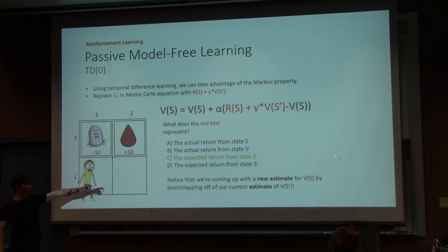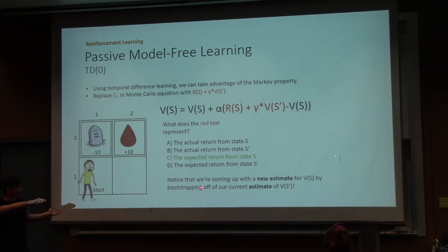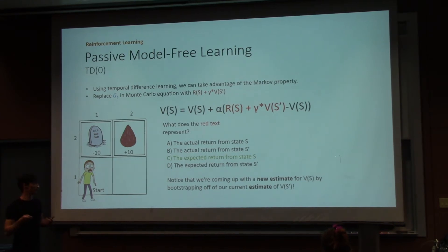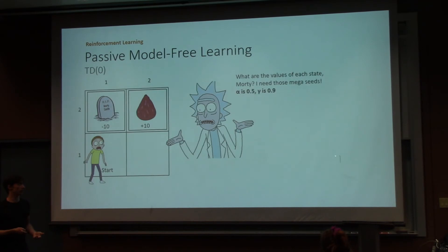So notice now that we're coming up with a new estimate, V(S), by bootstrapping off of our previous estimate. Or I'm sorry, coming up with a new estimate by bootstrapping off of our current estimate of S prime. Which is incredible, because we end up actually starting V(S) with any arbitrary values that we want, and then we're able to use those guesses to actually come up with a correct answer.